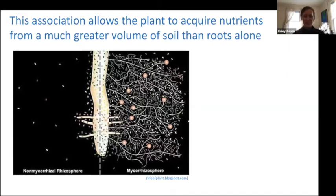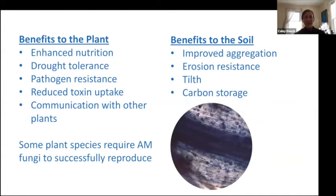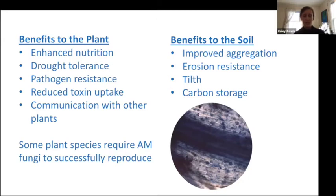The mycorrhizal sphere is this root-fungus system that expands far beyond the rhizosphere alone. With enhanced nutrition — better nitrogen and phosphorus — the plant overall ends up healthier and more robust, able to tolerate additional stresses it couldn't handle in a nutrient-depleted state. Mycorrhizal association can oftentimes increase drought tolerance through a combination of the fungi scavenging water, enhanced nutrition, and the plant's ability to grow a larger root system to scavenge water on its own. So there are multiple direct and indirect effects on how this association improves drought tolerance.